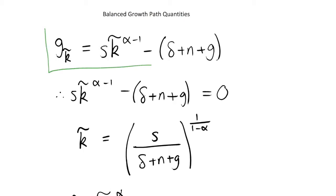So in order to do this we'll take this equation that we derived in the previous video. This is the growth rate of our k tilde or our capital per effective worker, and what we can note is that in a balanced growth path we have assumed that this is equal to zero. This is our definition of a BGP.